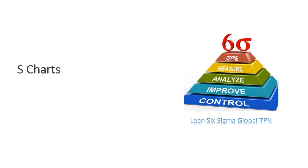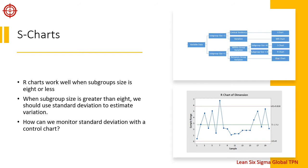Hello friends, today we talk about the S charts. In the previous lesson we created an R chart to monitor process variation within subgroups of size 5. For small subgroup sizes, the range is typically a good estimate of variation. But in many applications we have more data available and can take larger subgroup sizes. When subgroup size is greater than 8, we should use standard deviation to estimate variation.